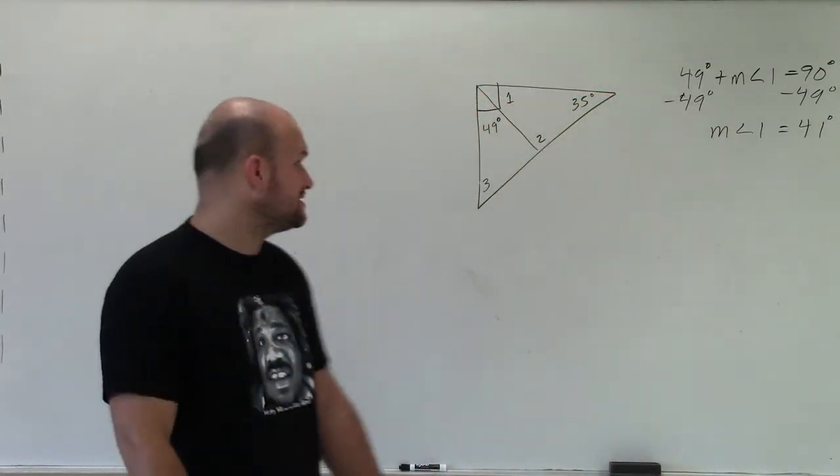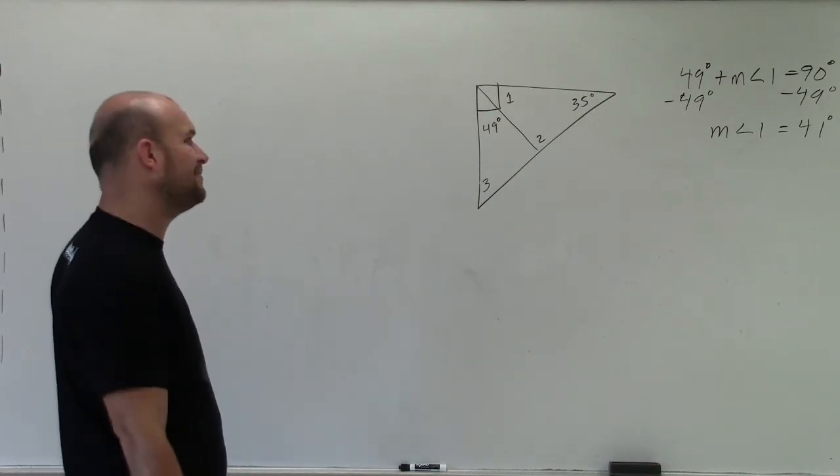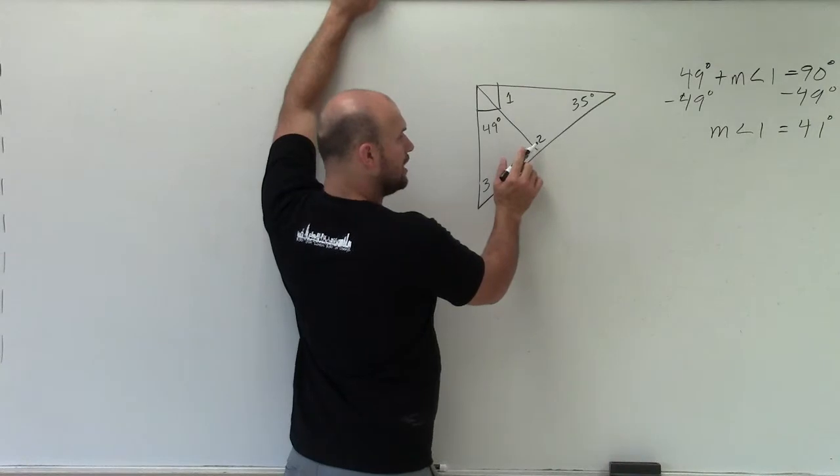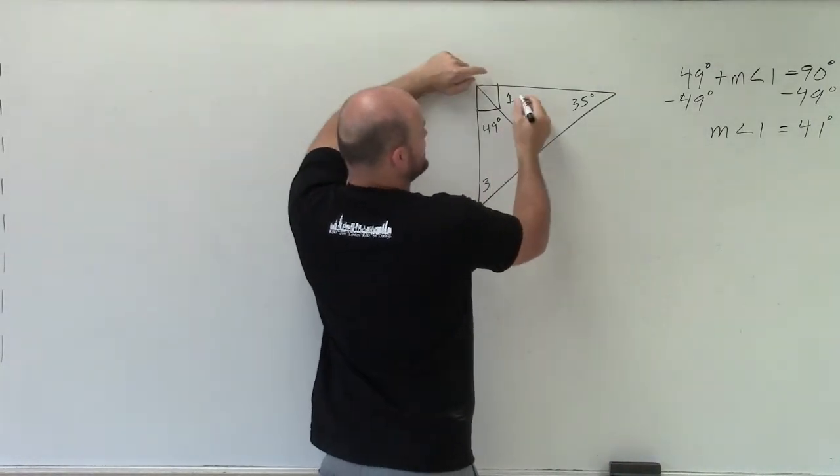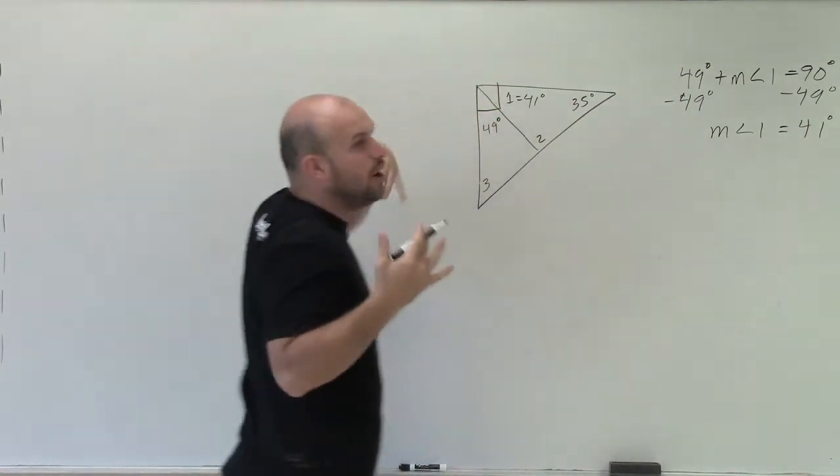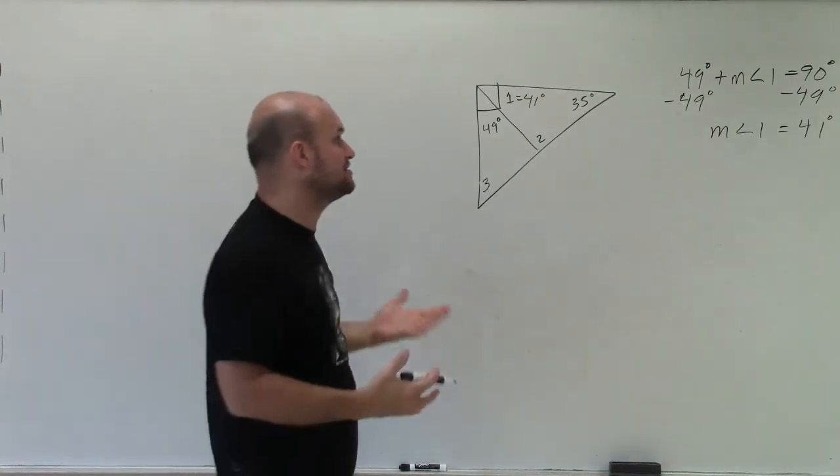So now, now we need to start working on measure of angle 2 and 3. And there's a couple different ways we can look at this. I'd like to go and see angle 2, and the way that I'll do angle 2 is I understand, so now let's know that that's 41 degrees, right? Well, remember that the sum of all the measure of all the interior angles of a triangle, the triangle interior sum theorem,